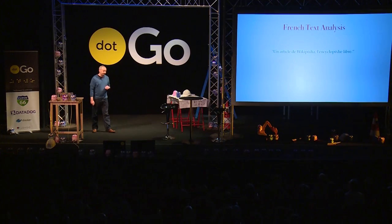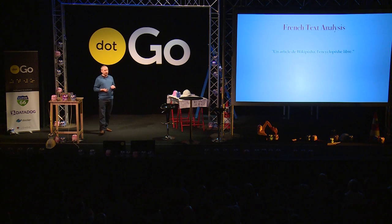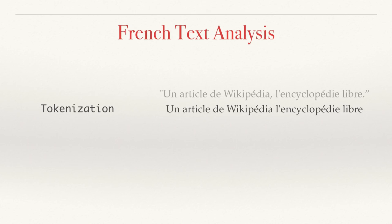Let's take a look at an example, because one of the techniques we use is text analysis that's specific to the language. So let's look at an example in French. I have a sentence fragment here: "Un article de Wikipedia, l'Encyclopedia Libra." The first step we're going to do is called tokenization. Here we take the sentence and we decompose it into individual words.